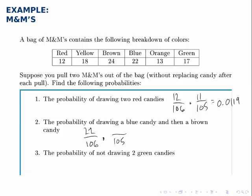So if we drew a blue candy the first time, there's still 105 total left, but all the brown ones are still left. So we have 24 out of 105, and as a decimal, that simplifies to 0.0474 approximately.